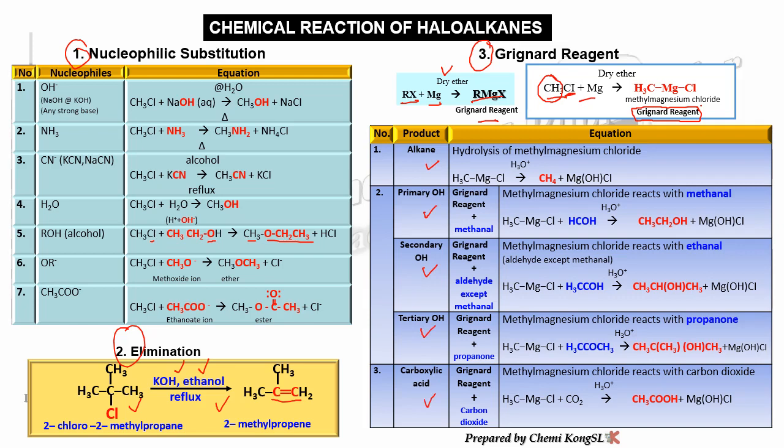When the Grignard reagent reacts with methanal (formaldehyde), it forms a primary alcohol. When it reacts with any other aldehyde — such as ethanal or propanal — it forms a secondary alcohol.